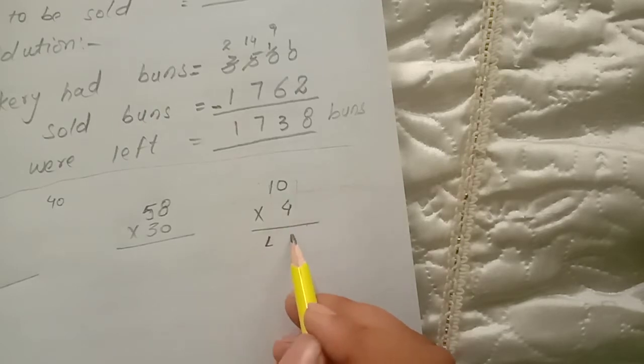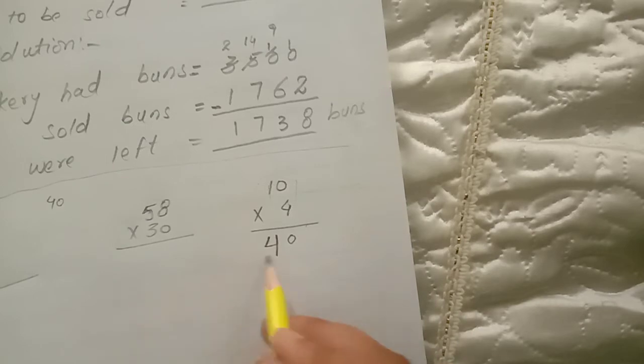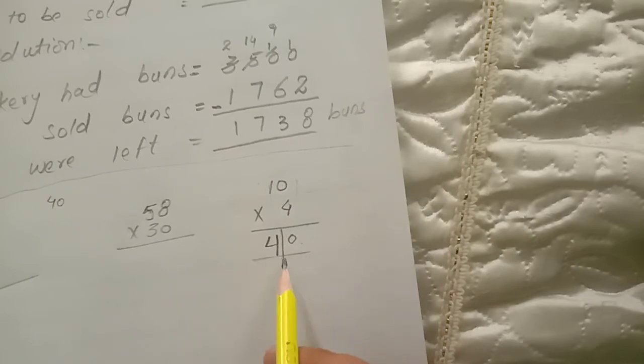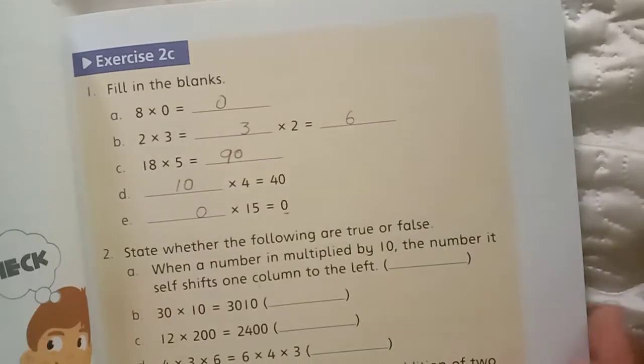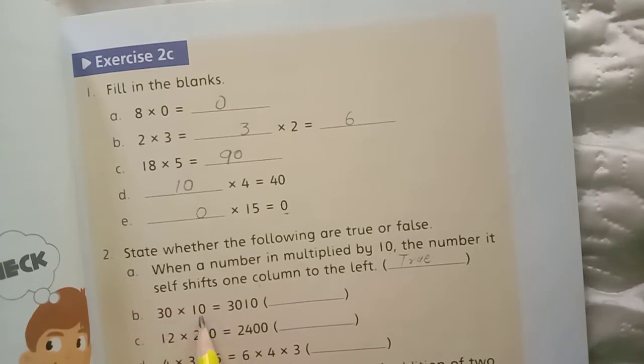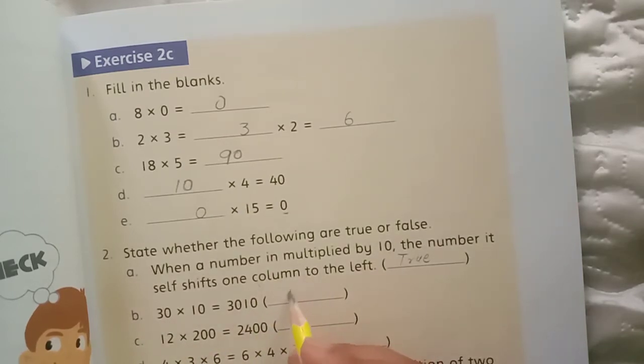40. Again, the number shifts one column to the left, and there are two columns. 30 tens is 300. So this statement is false.